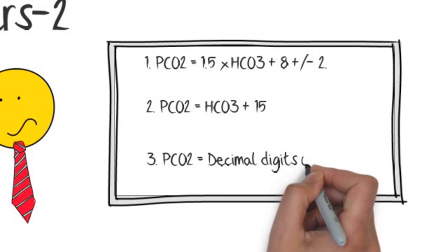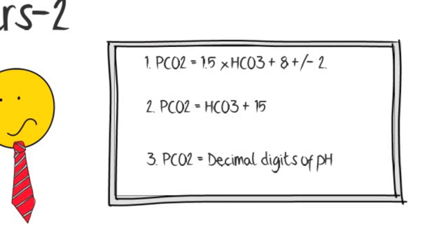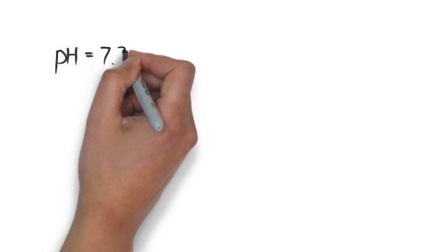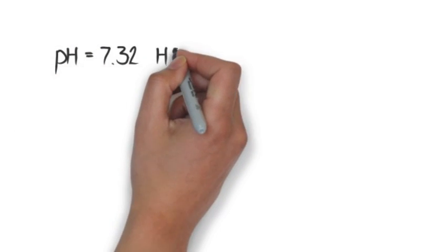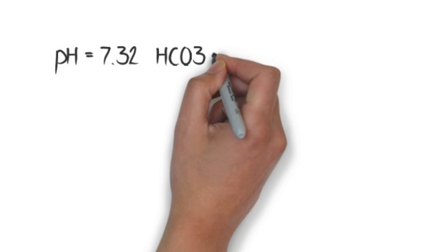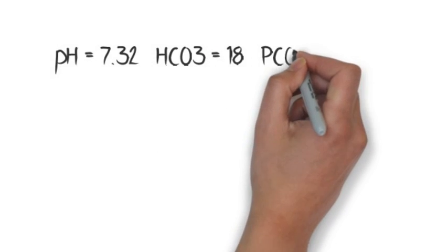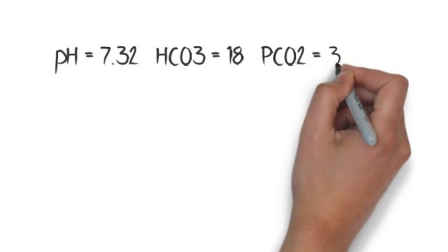The third equation is that pCO2 equals the decimal digits of the pH — so if pH is 7.24, then pCO2 should be 24. However, this third formula is used only in mild to moderate metabolic acidosis.